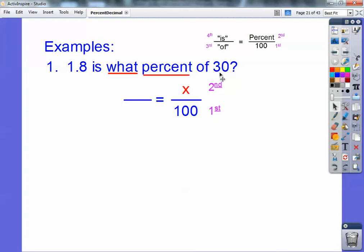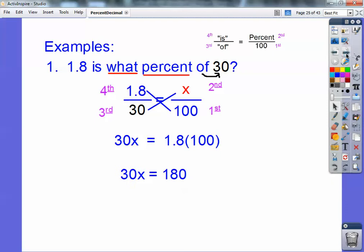And then look for the word 'of'. Here's 'of'. What's right after that? 30. That goes in the bottom left-hand corner. And then the leftover piece is right over here, 1.8. So it's right there next to the word 'is'. And then you can cross-multiply. And so 30x equals 1.8 times 100, and then anything times 100 just moves that decimal over two places to the right. So it becomes 180. And 30 goes in there six times.